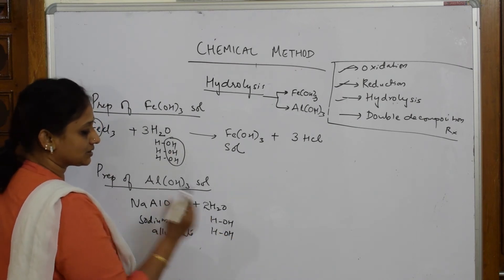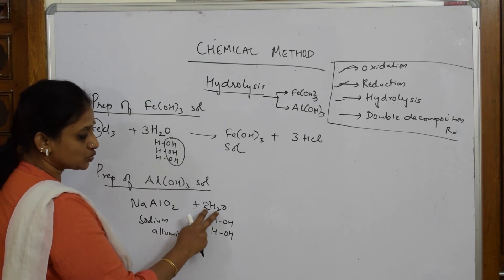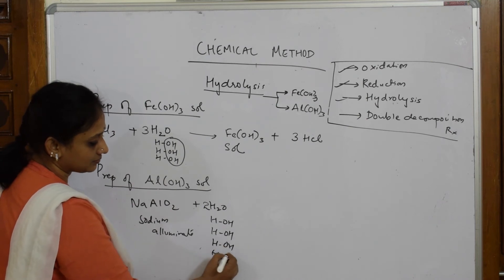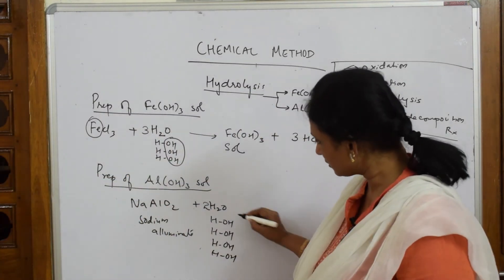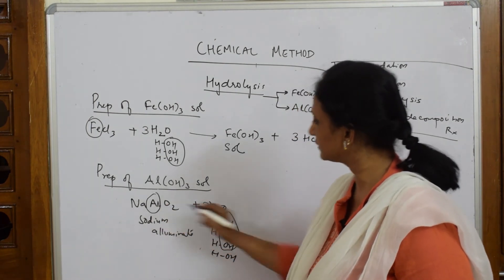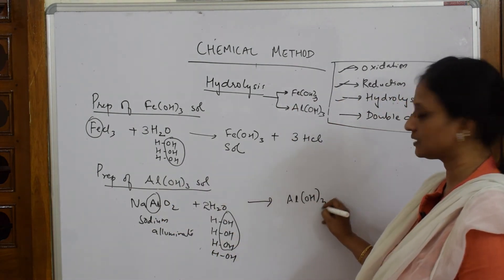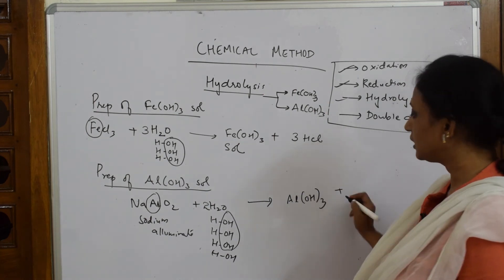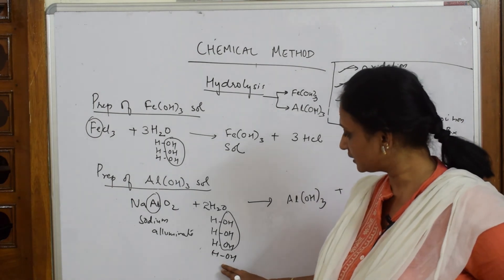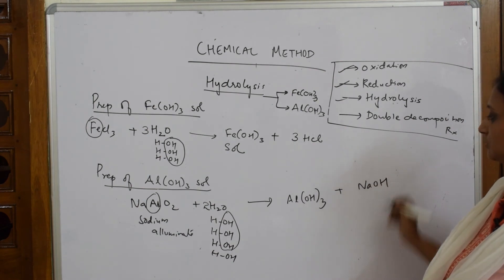2 moles means 2 H2O, so we have 4 hydrogens total. Observe carefully: 3 OH and 1 aluminium come out as aluminium hydroxide — Al(OH)3. We still have 1 OH left, and this 1 OH comes out with sodium as sodium hydroxide, NaOH.